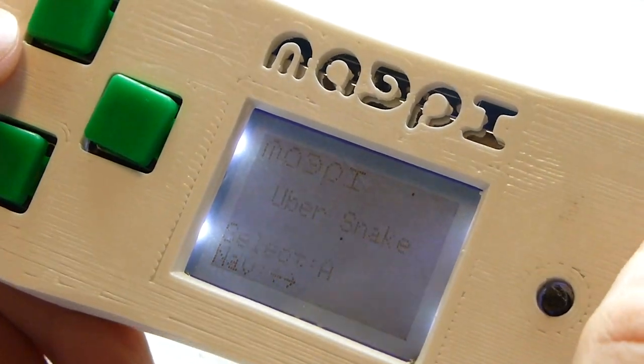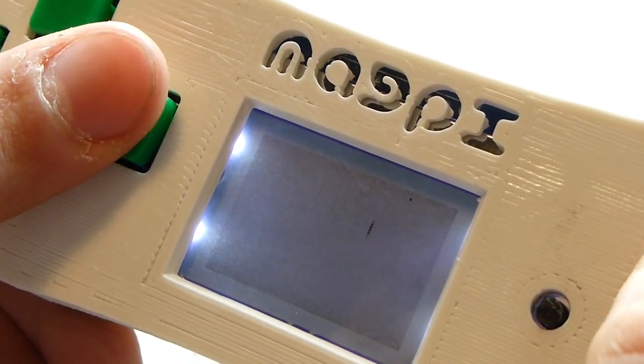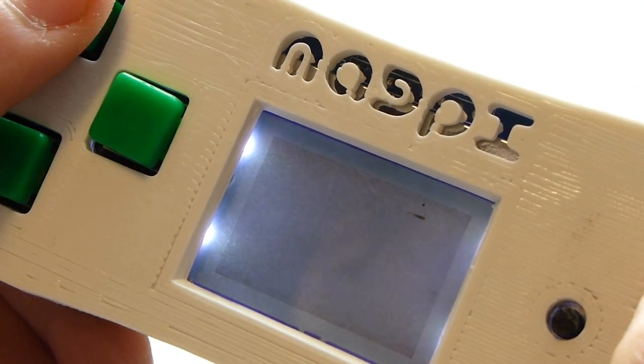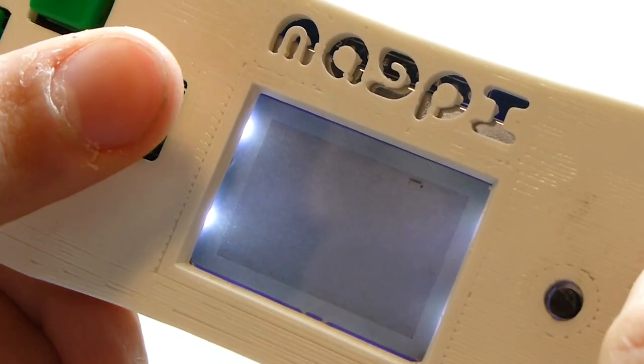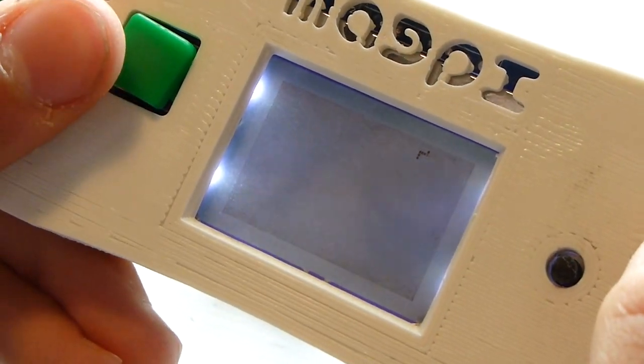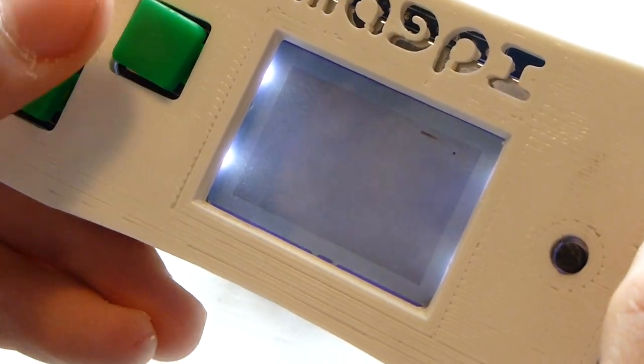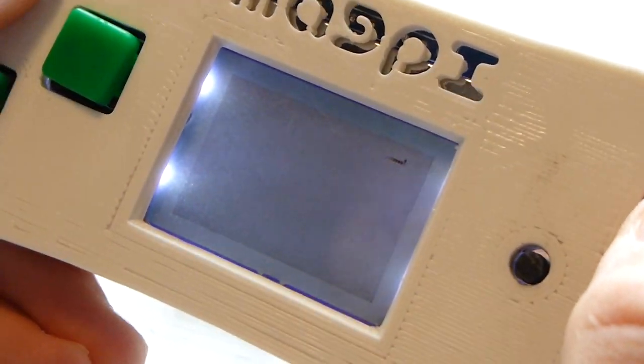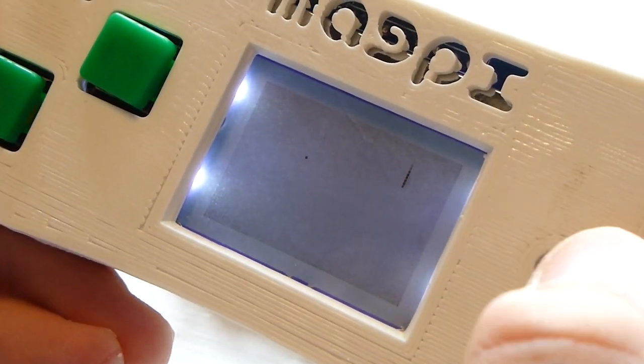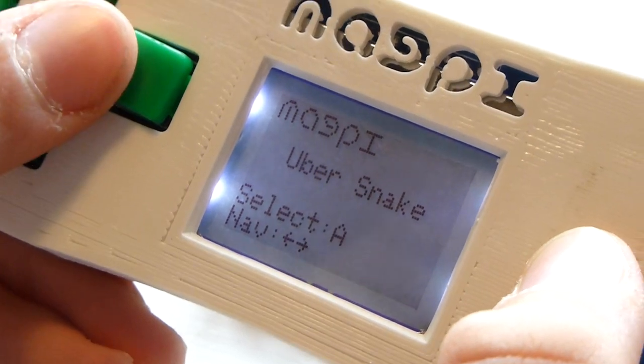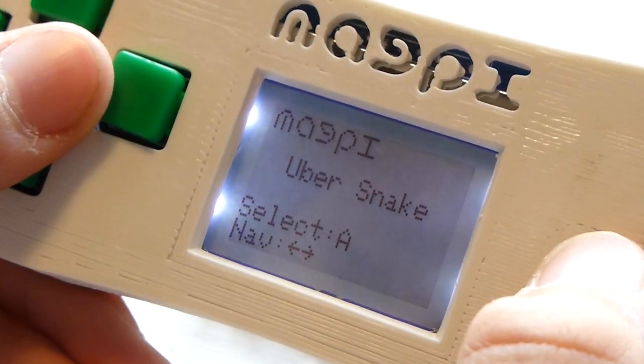This is a game I'm working on called Ubersnake. Right now it's just Snake, the game, and it's not totally done. You have a little snake guy, you have to catch all these little apples, and I'm planning on adding like power-ups and stuff later. So that's the Magpie. Thanks for watching.